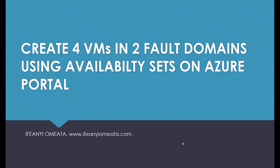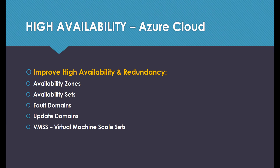We're going to create four virtual machines in two fault domains using the availability set options on the Azure portal. Before we set up the virtual machines, we need to understand how to achieve high availability on the Azure cloud. There are various ways we can improve high availability and redundancy. The first way is through availability zones, which we used in our previous videos, and we saw that it helped in creating high availability and redundancy.